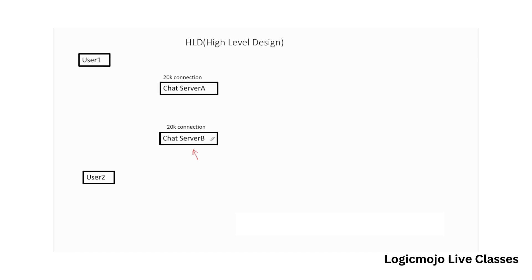One chat server can communicate with 20,000 different users at a time, so 20,000 different connections can be created by using one chat server. Since we have millions of users trying to access the messaging system, we need a cluster of chat servers. In this case, assume that for user 1, chat server A is assigned, and for user 2, chat server B is assigned. As a first step, user 1 will send a message — let's call it message A — to chat server A.